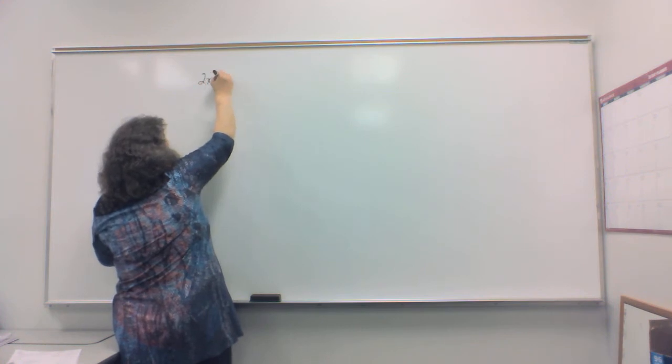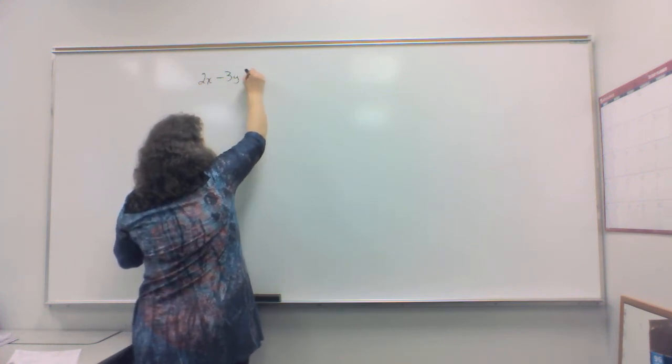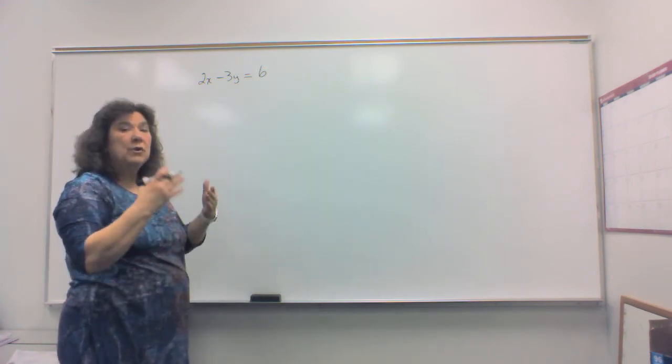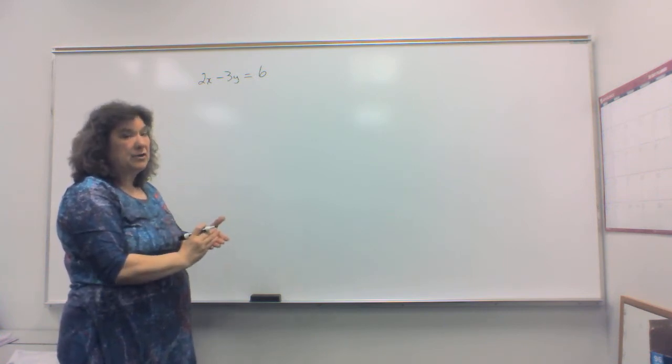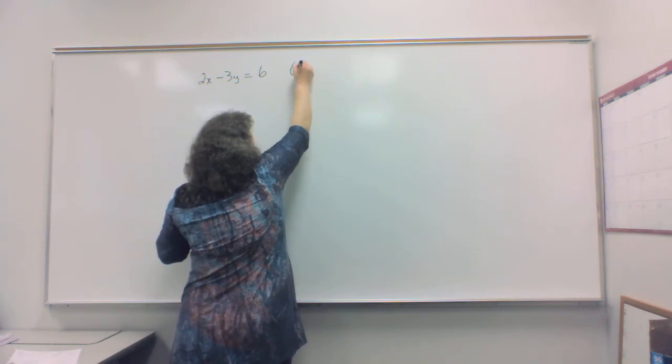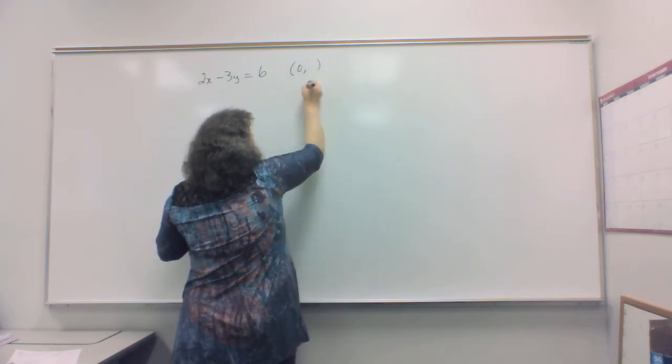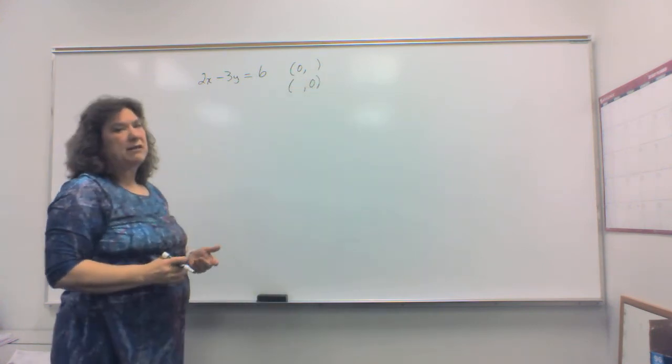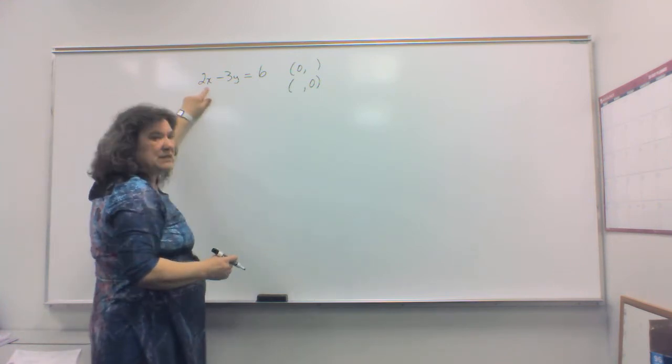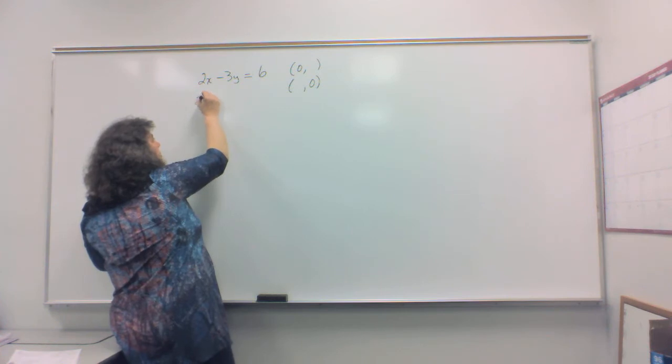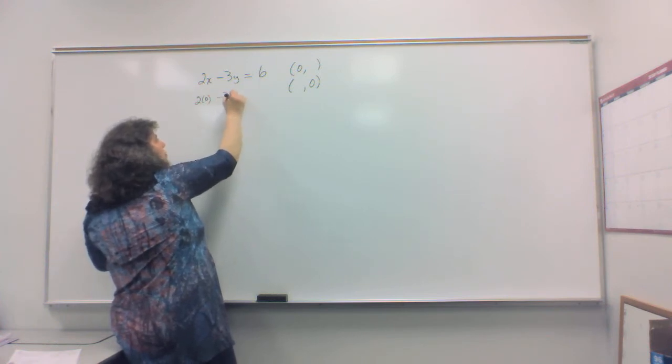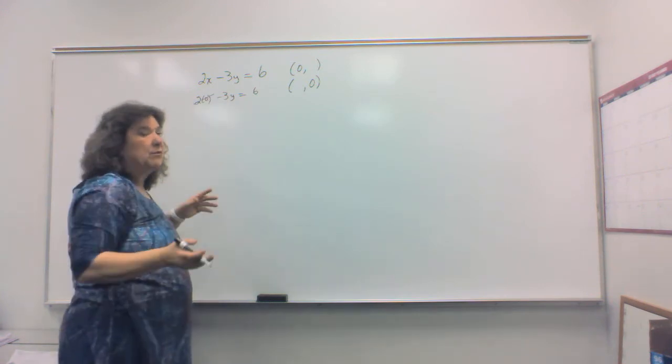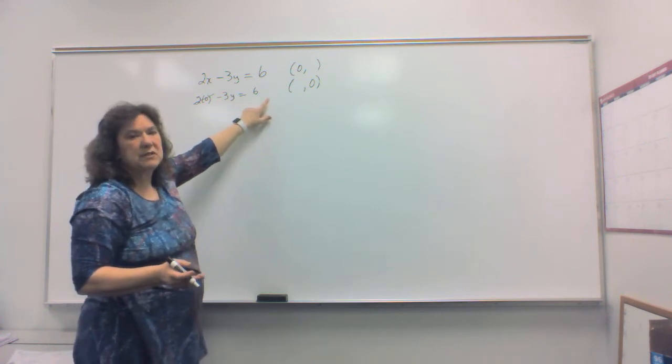Let's do a couple of those. 2x minus 3y equals 6, for example. Now, remember in your ordered pairs, when you're graphing an x-intercept and a y-intercept, we build two ordered pairs. One ordered pair has a 0 in the x, and the second ordered pair has a 0 for the y. So, how do we find those? Well, first of all, put 0 in for the x. So, 2 times 0 minus 3y is equal to 6. That is 0. 2 times 0 is 0. And I'm left with negative 3y equals 6.